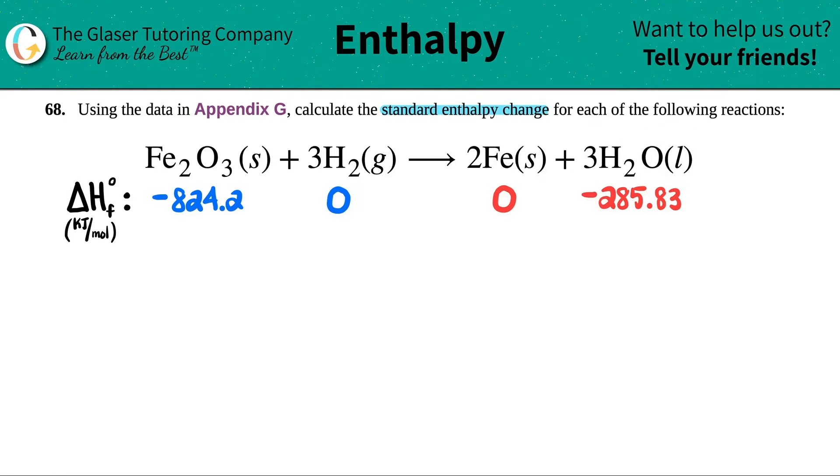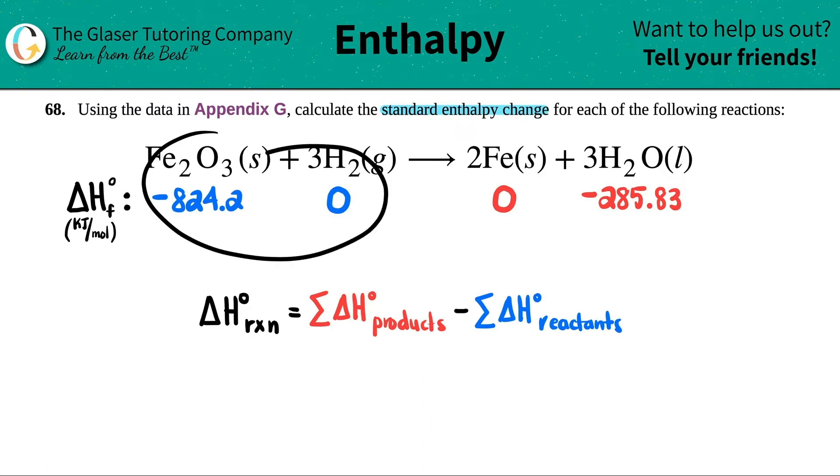Now, standard enthalpy change. This is a simple formula. It's this guy right here. I like to sum this up by saying it's just the sum of the products minus the sum of the reactants. This little symbol here just means the sum, aka the addition of. We want to find out the delta H for the whole reaction. Rxn is just short for reaction. So if I want to get the sum of the products and the sum of the reactants, I have to get one number for the left-hand side and one number for the right-hand side.